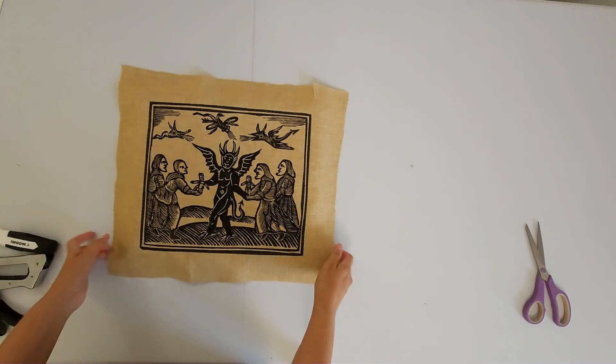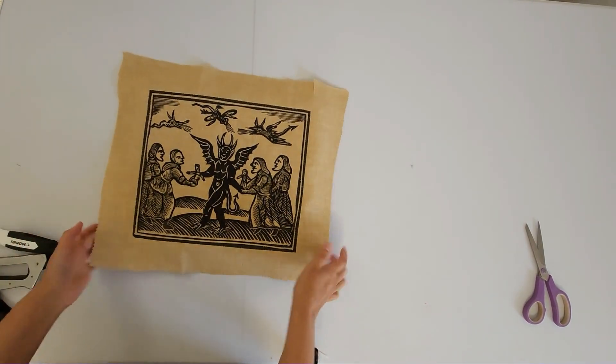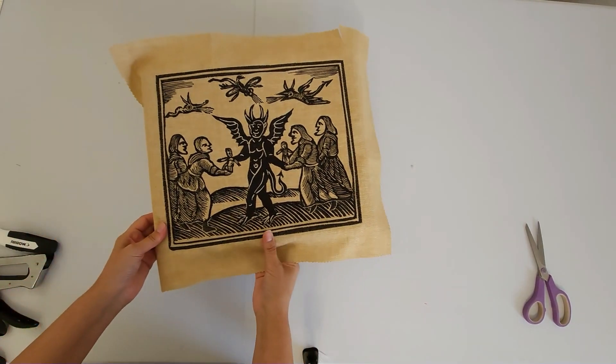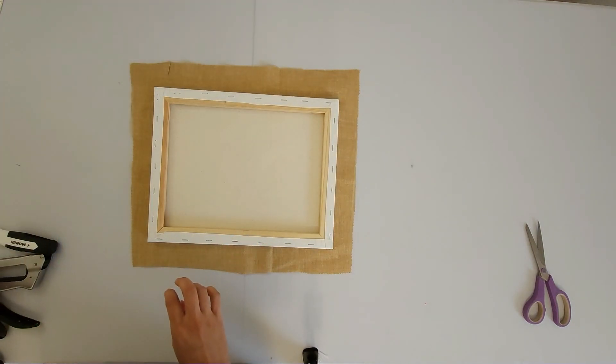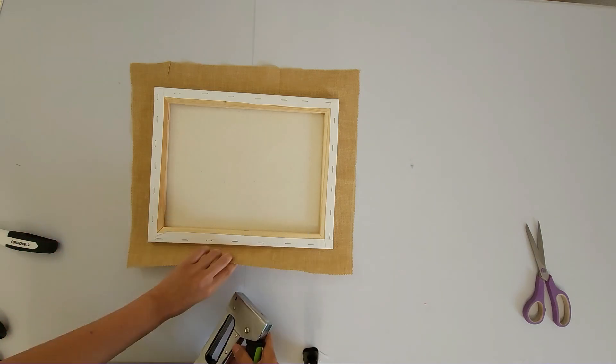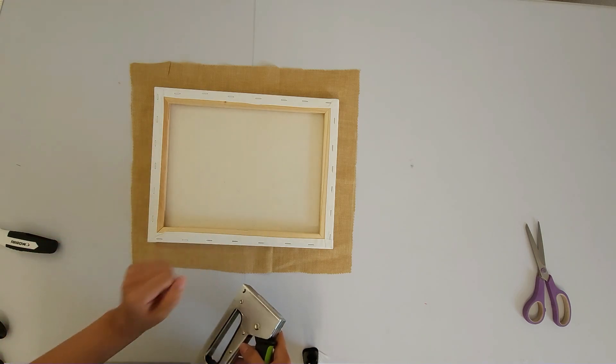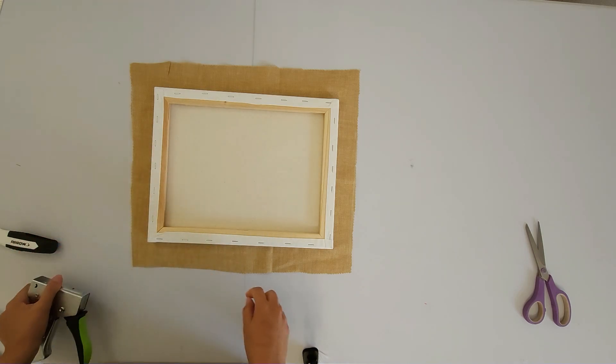Now the basting spray is sticking it. So we don't have to worry about this moving around. And we're going to turn it over and start stapling. So I have my staple gun. I'm just going to do four staples. One on each side and then I'm going to turn it over and look at it before I get too far and realize something's wrong.